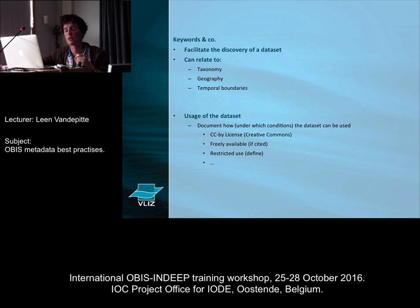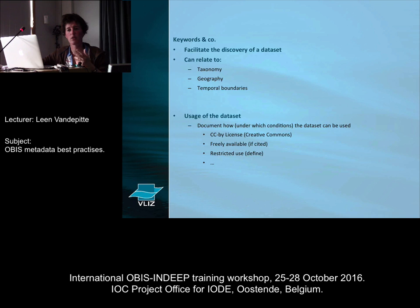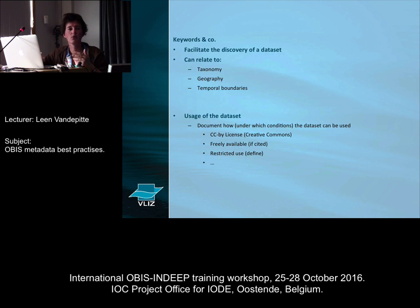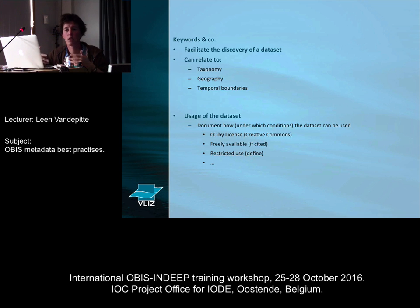There are also keywords that you can assign to your dataset — just as with a publication. Keywords can relate to several topics: taxonomy, geography, or temporal boundaries. You also need to document the usage of your dataset — how can someone else make use of it? We recommend CC BY licenses. We are very happy if someone says this dataset is freely available; if for some specific reason there would be restricted use, that's also an option you can indicate. For OBIS and all its nodes, we aim for open access data — CC BY or CC0.